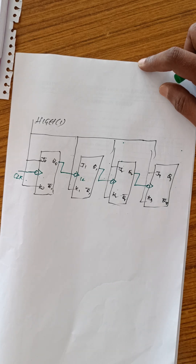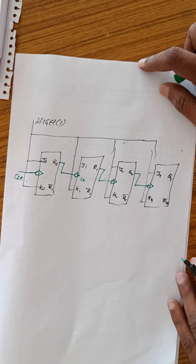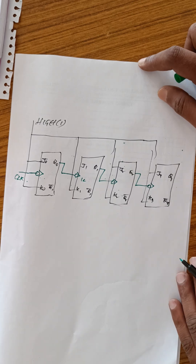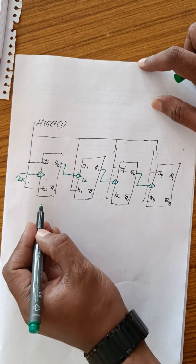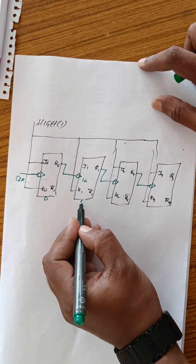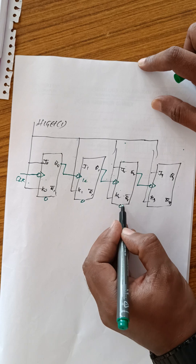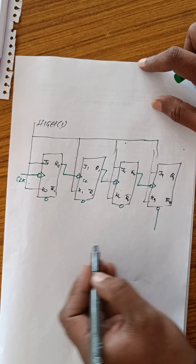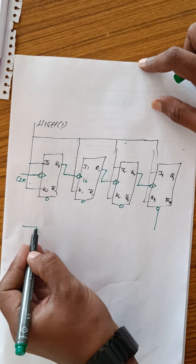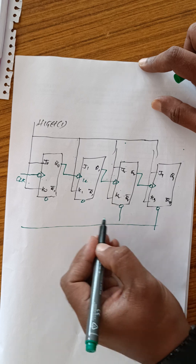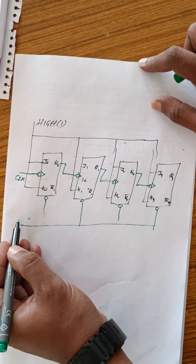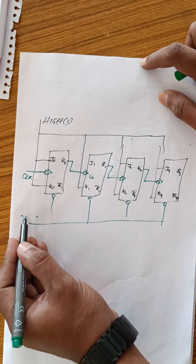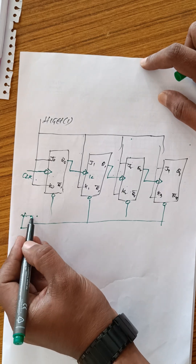The counter counts from 0 to 9 only; from 10 to 15 it does not count. To achieve this, a clear circuit is added. The clear circuit uses a NAND gate (or AND gate) — not a combination gate — connected to Q3, Q2, Q1, and Q0 to reset the counter.